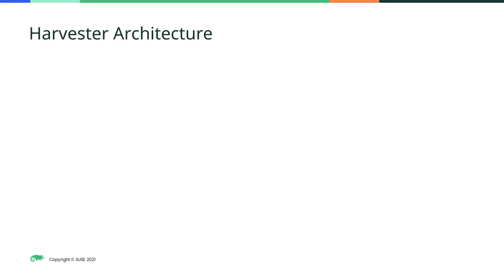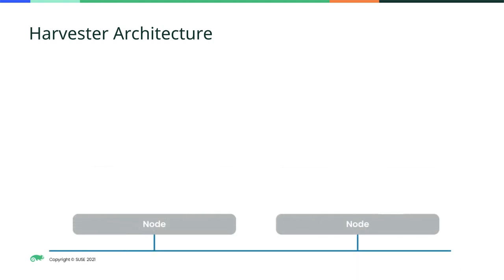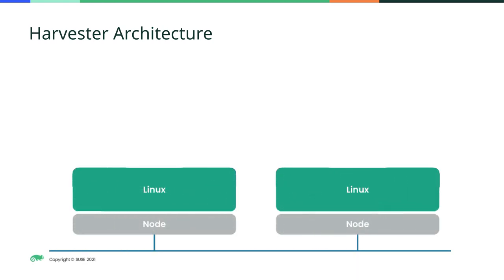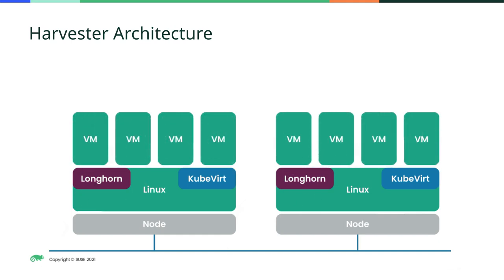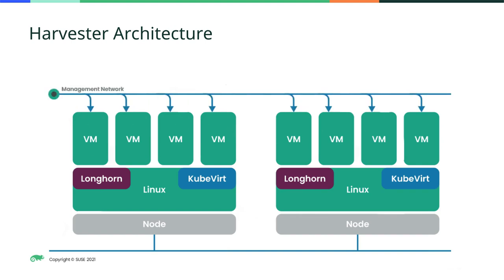At the architectural level, Harvester is a cluster of nodes, each one of which is running SUSE Linux, which is a very stable and secure operating system, with Longhorn and KubeVirt providing the storage and virtualization layers. The virtual machines spin up on top of this. By default, each virtual machine connects into the management network, which is a Kubernetes overlay network that can access any virtual machine in the cluster.